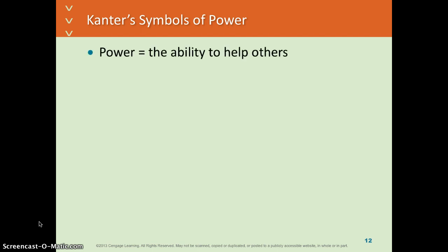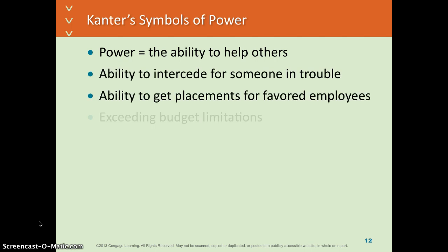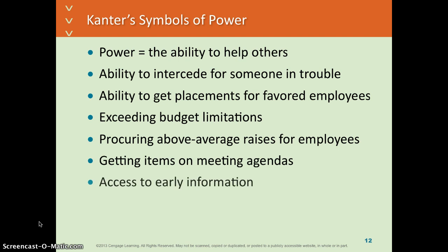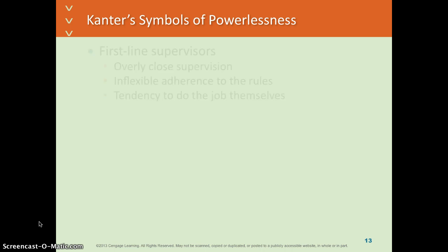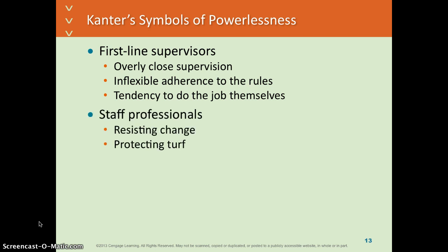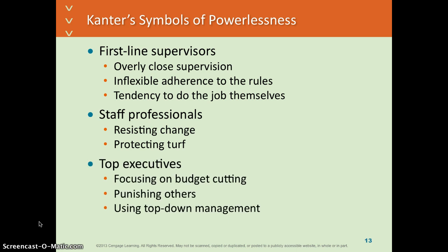Rose Moss Kanter looked at power as the ability to help others and having the ability to accomplish things. Someone who didn't tend to have power was viewed as, for example, a first-line supervisor that watches everything you do and can't break any rules, a staff person resisting change and protecting their turf, or a top executive punishing others through budget cutting. These tend to be reflections of people or situations that are powerless.